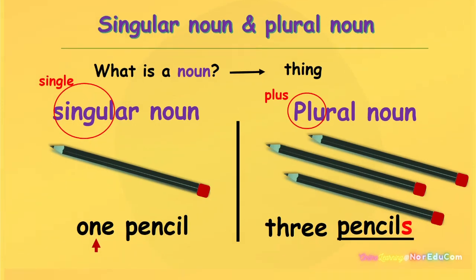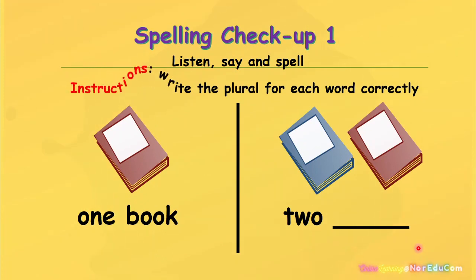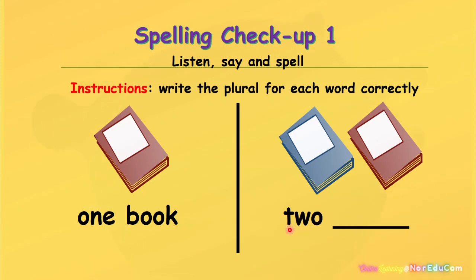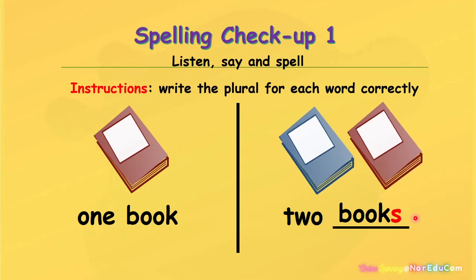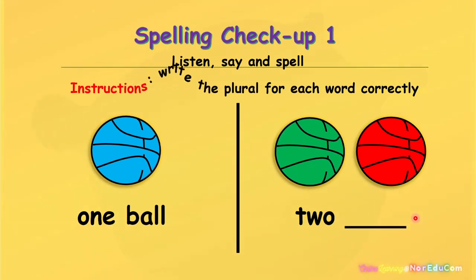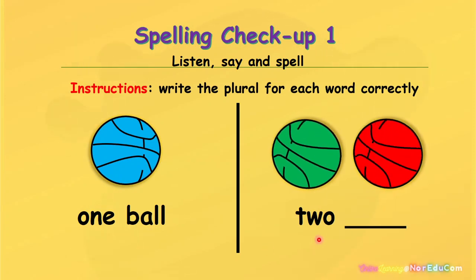Let's go to the next slide. Now let's write the plural for each word correctly. One book. What is the answer here? Two books. Well done, everybody. One ball, two balls. Yes, that's very good.